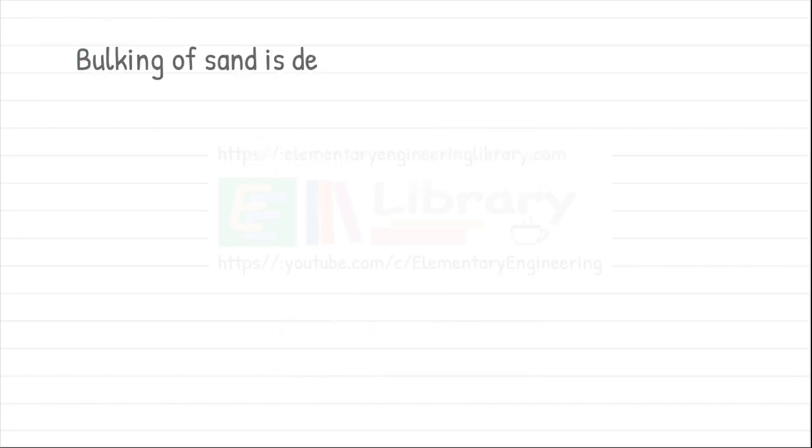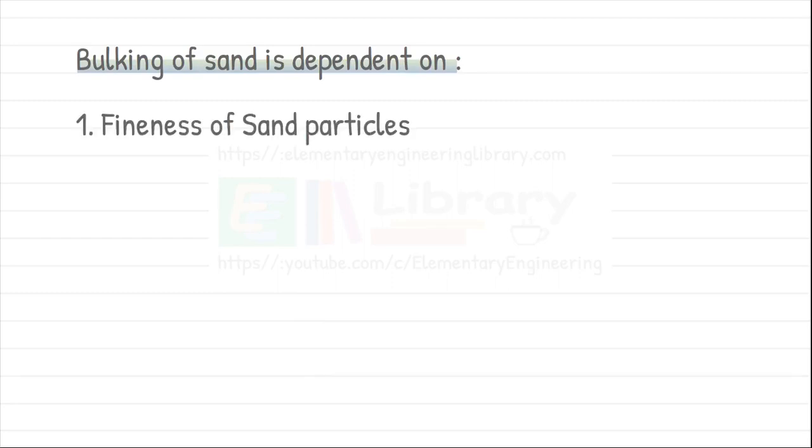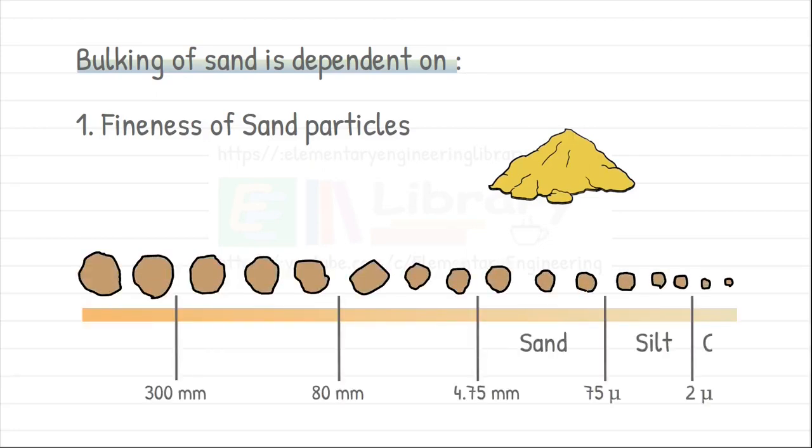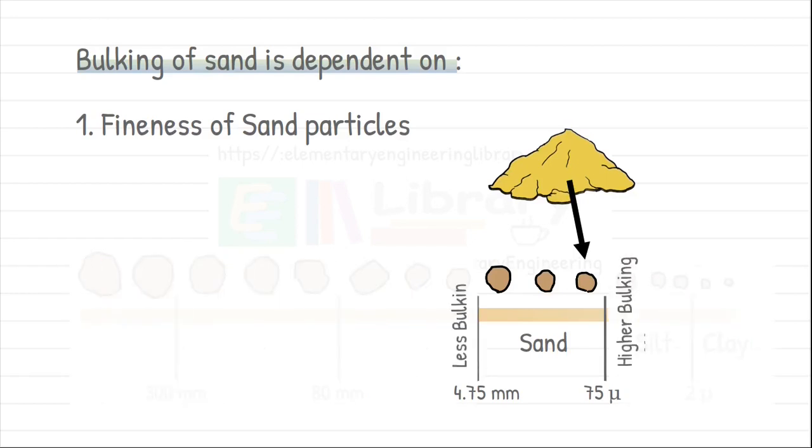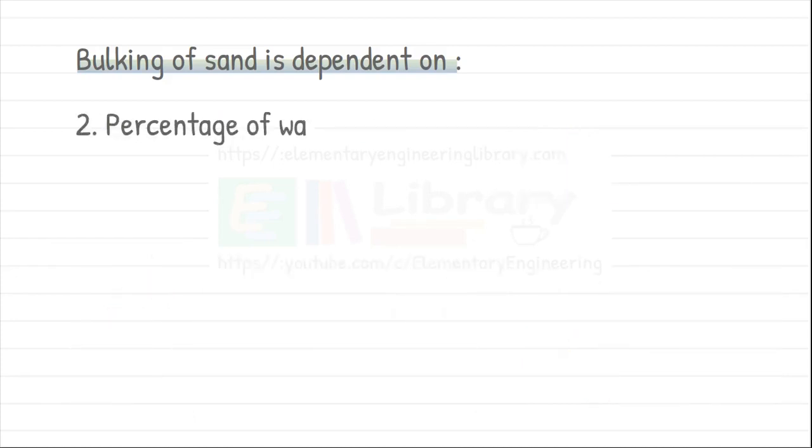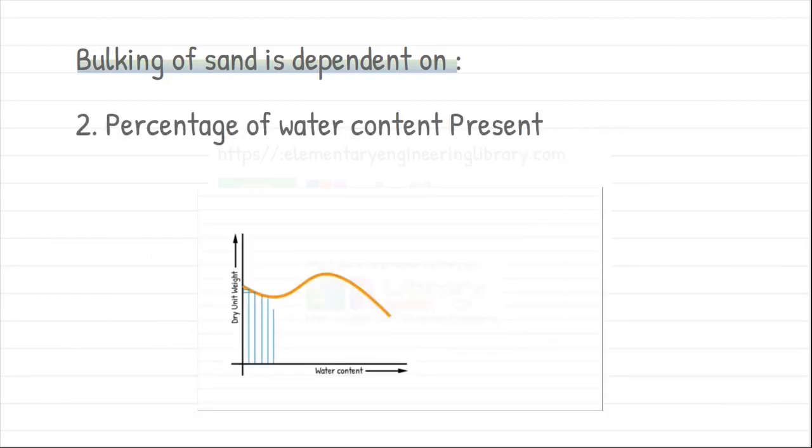This bulking of sand is dependent on two factors. One is the fineness of sand particles. Fine sands, that is sand particles of size on this side of size range, show higher bulking as compared to the coarse sands. And second, percentage of moisture content. And we have already seen how water content affects the volume of sand.